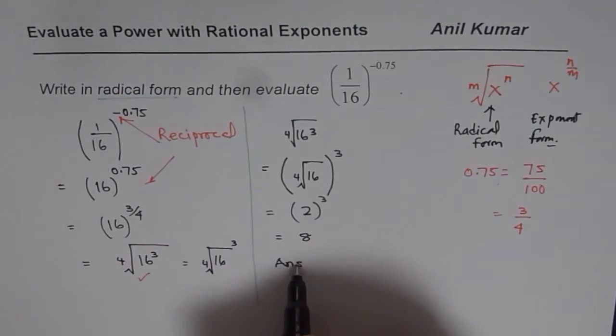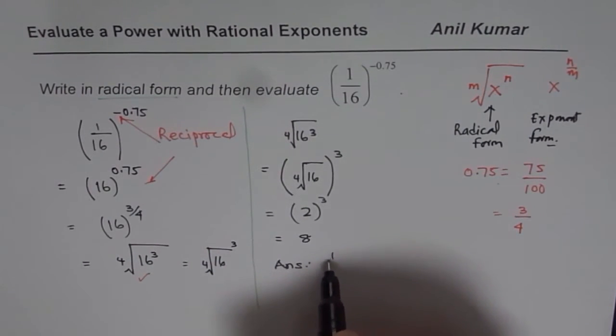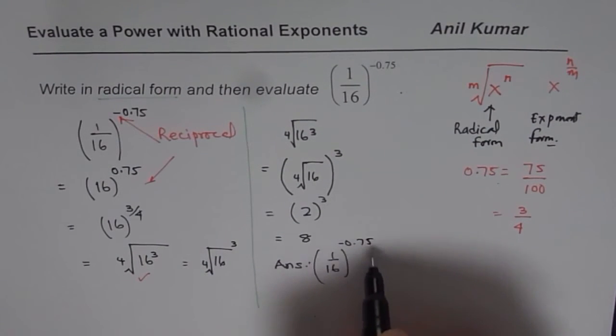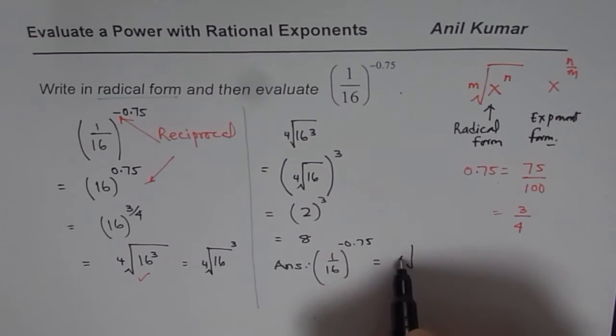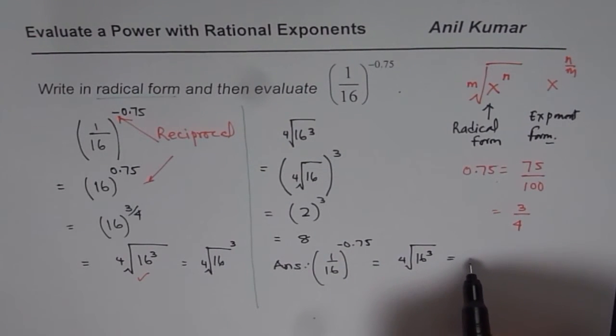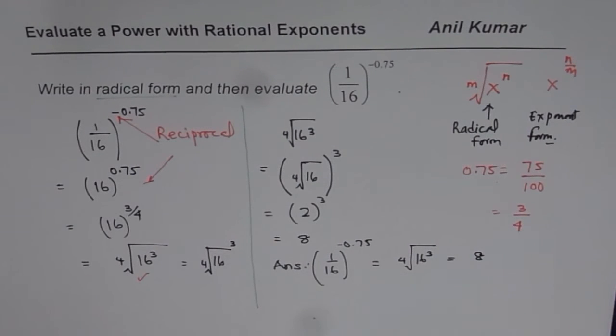So, our answer is that 1 over 16 to the power of minus 0.75 could be written as 4th root of 16 cube, which is equal to 8. That is how you could actually solve this particular question. I hope that helps. Thank you and all the best.